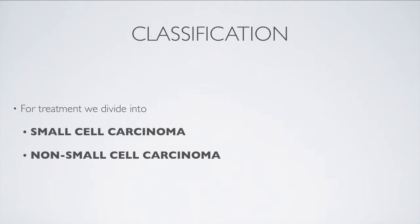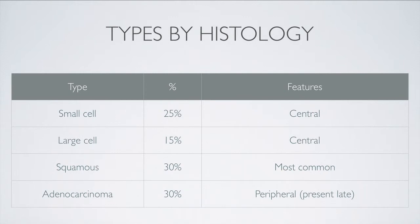Let's move on now to the classification of lung cancer. The classification system most commonly used is that which is most relevant to the treatment. In this, we divide lung cancer into small cell carcinoma and non-small cell carcinoma. However, you should also be aware of the classification of lung cancer by histological subtype. There are four main types: small cell, large cell, squamous, and adenocarcinoma. The large cell, squamous, and adenocarcinoma types together make up the non-small cell lung cancers.